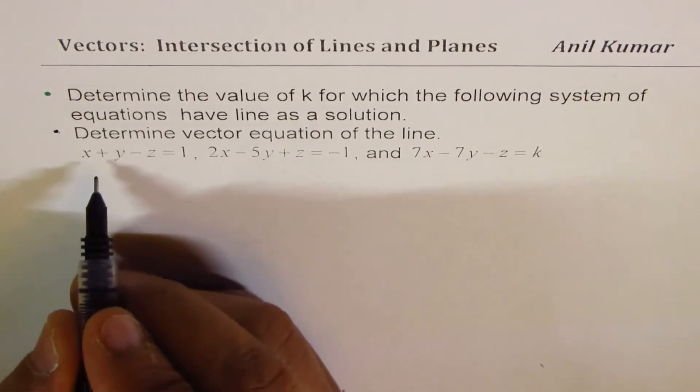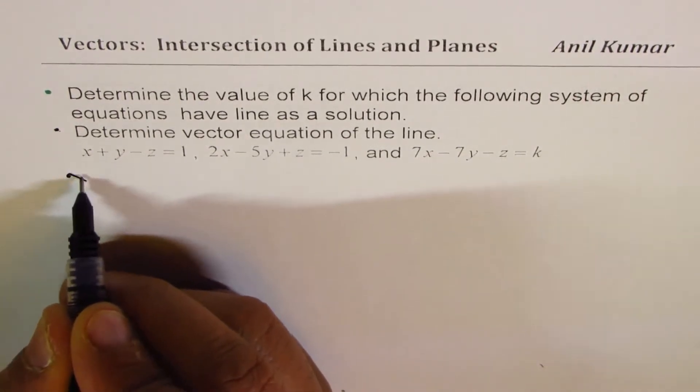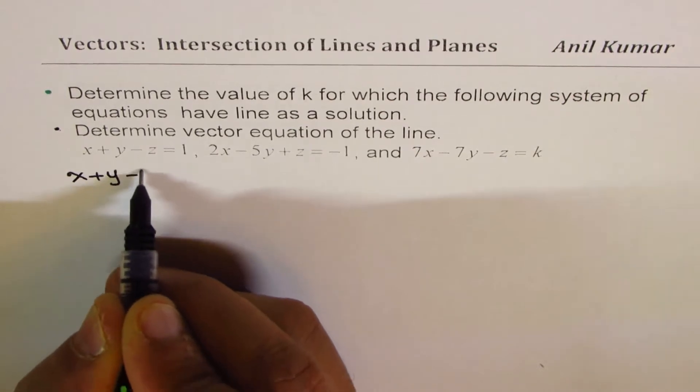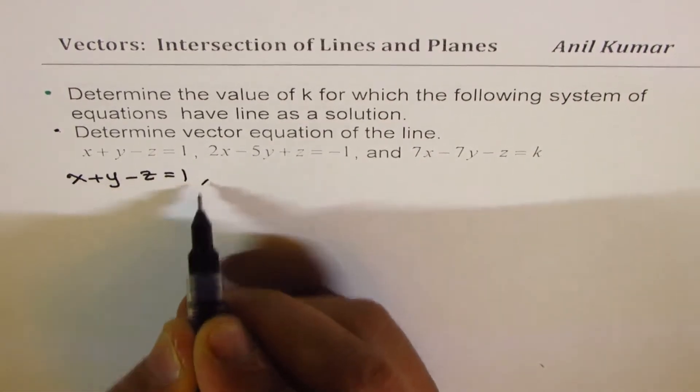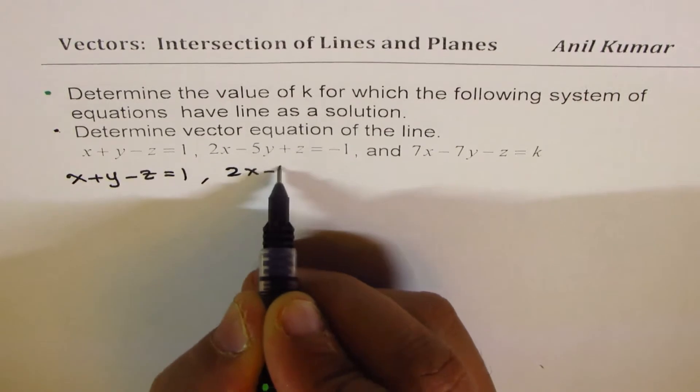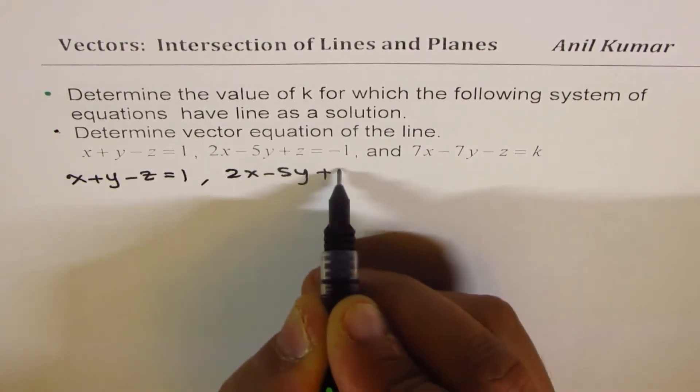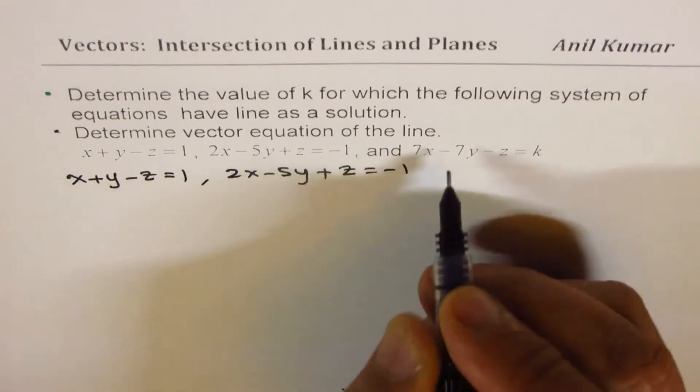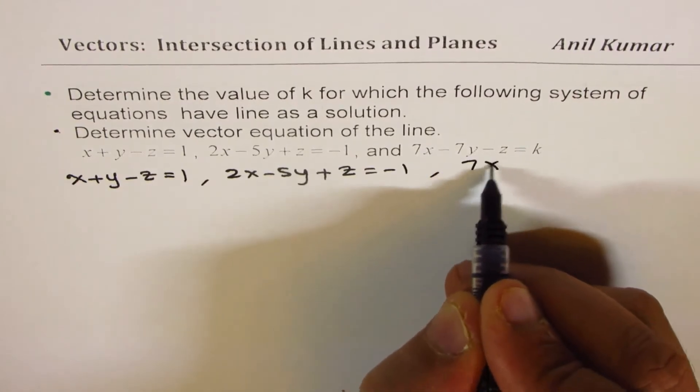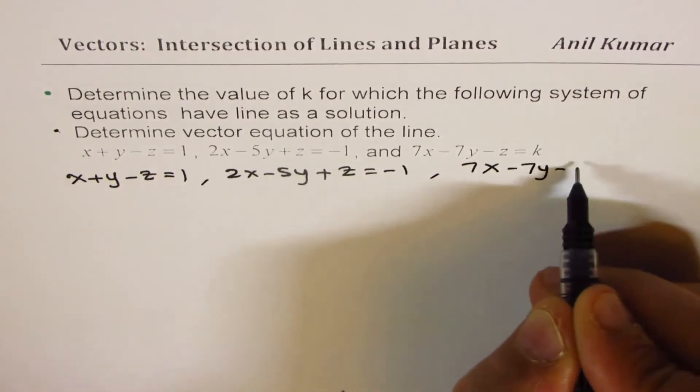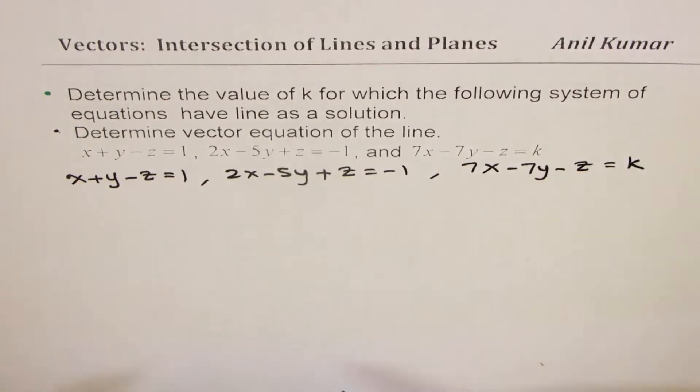System equation is, let me rewrite them. So we have x plus y minus z equals to 1. The second plane is 2x minus 5y plus z equals to minus 1. And the third one is 7x minus 7y minus z equals to k.